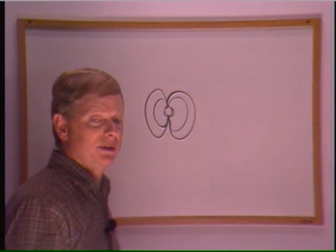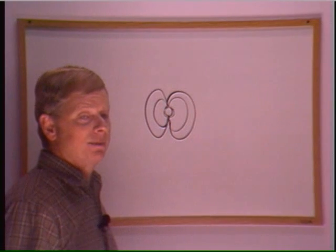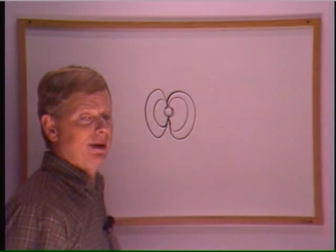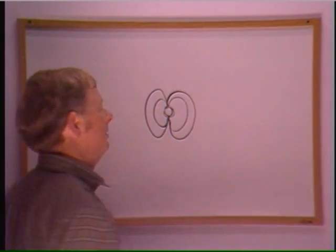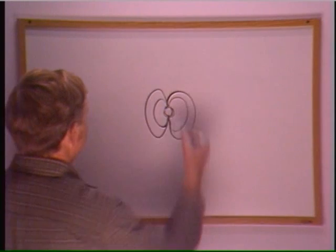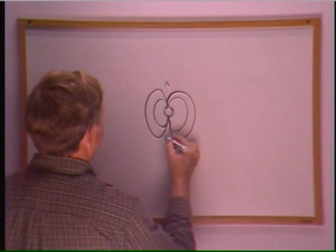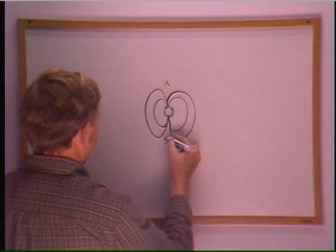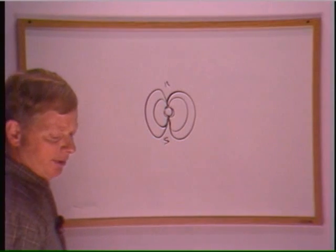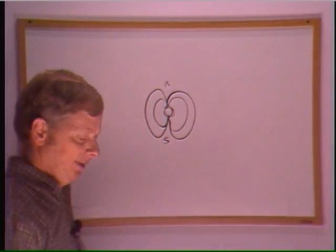This is also how atoms combine together — I'll explain that in another video. Each atom has a north and south magnetic pole because it too is a dipole.